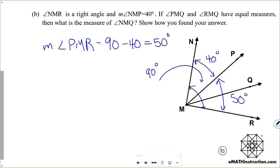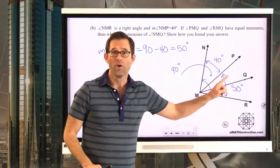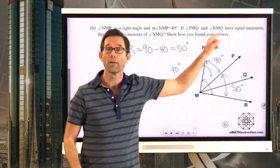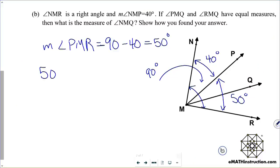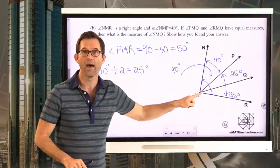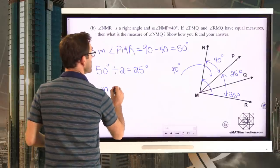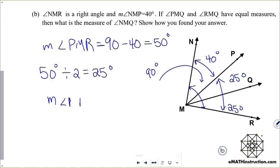So the measure of angle PMR is 50 degrees. I still need to know what this little angle PMQ is, but we're told PMQ and RMQ have equal measures. So I can take 50 degrees and divide by 2, getting 25 degrees each. Therefore, angle NMQ must be this rotation of 40 plus this rotation of 25. The measure of angle NMQ is 40 plus 25, or 65 degrees.